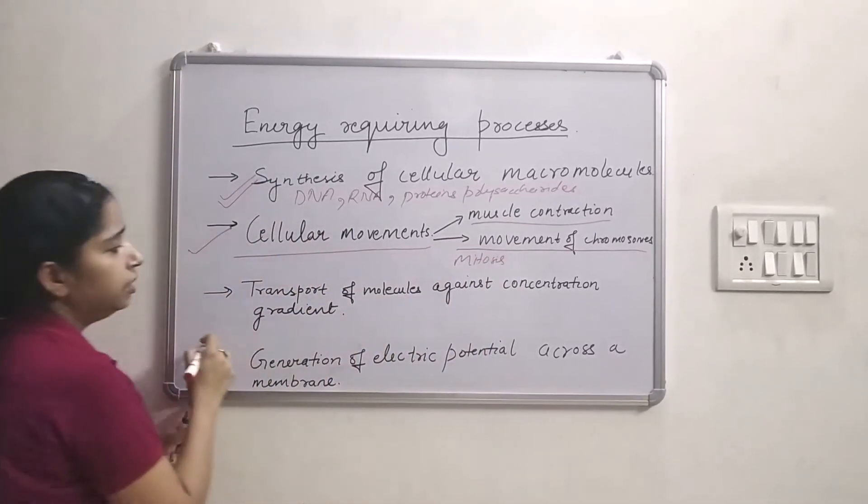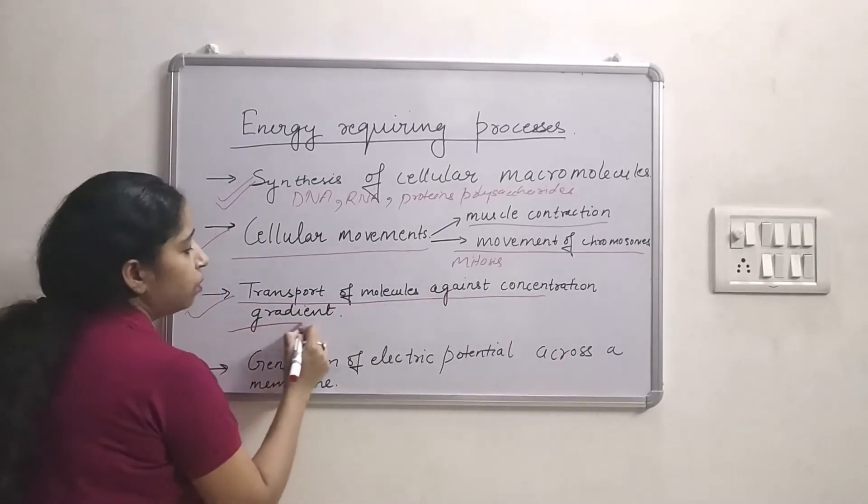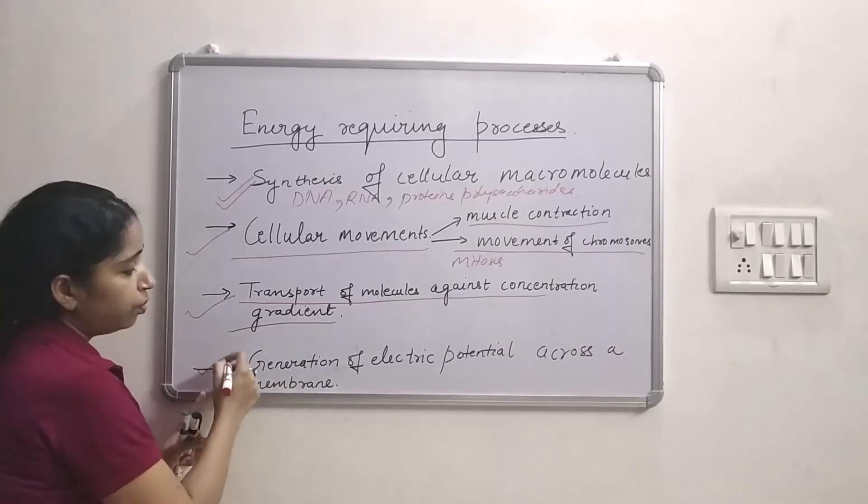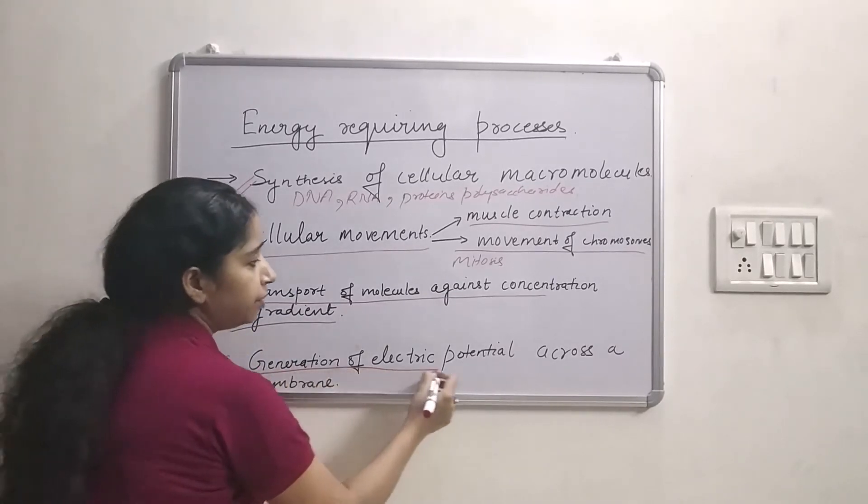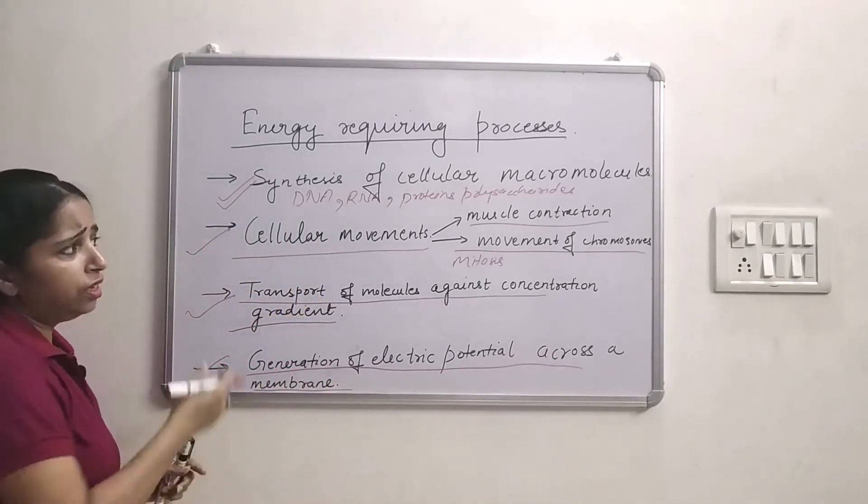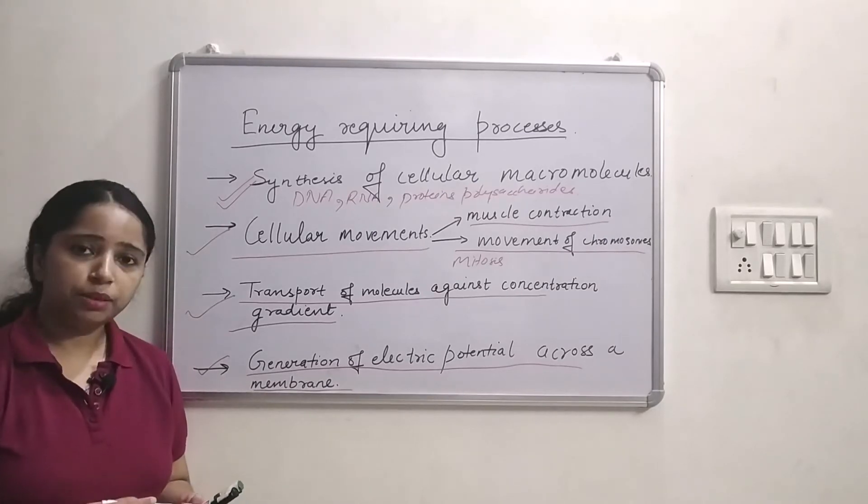Third is transport of molecules against their concentration gradient. And fourth is generation of electric potential across a membrane. So these are few examples which need energy of ATP.